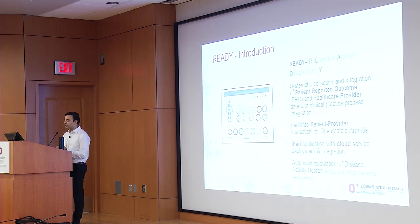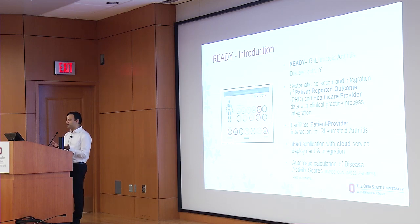Ready allows you to automatically calculate disease activity scores. A lot of this is currently being done using paper forms — disease measurements like pain points and the number of swollen joints are captured via paper, and scores are calculated by hand. You can imagine the amount of work, energy, and errors introduced in that process. All of this would be transferred to the app itself.